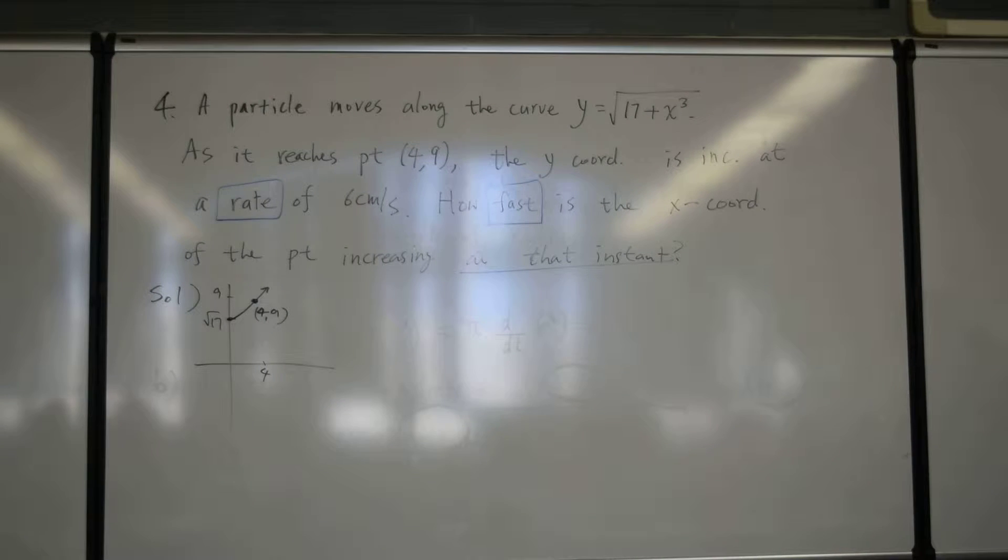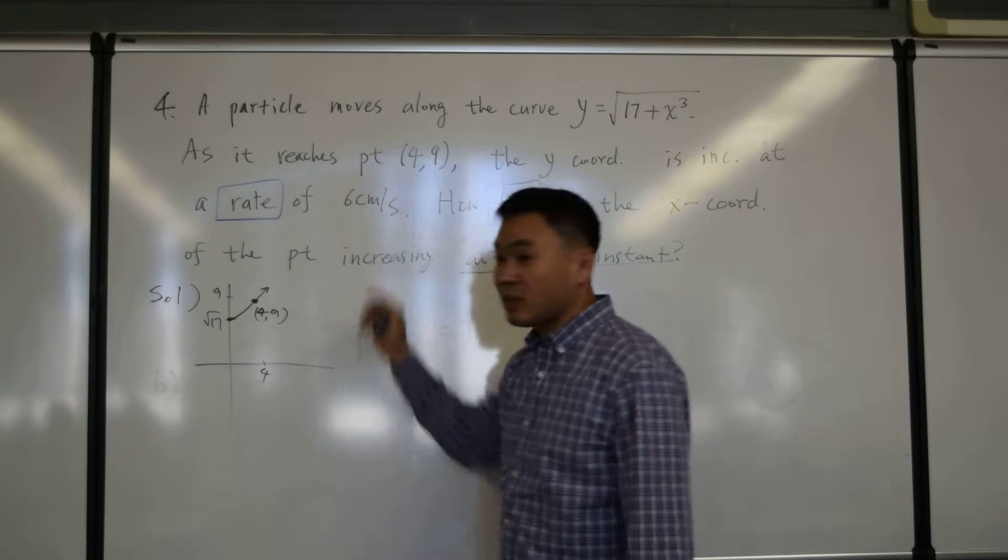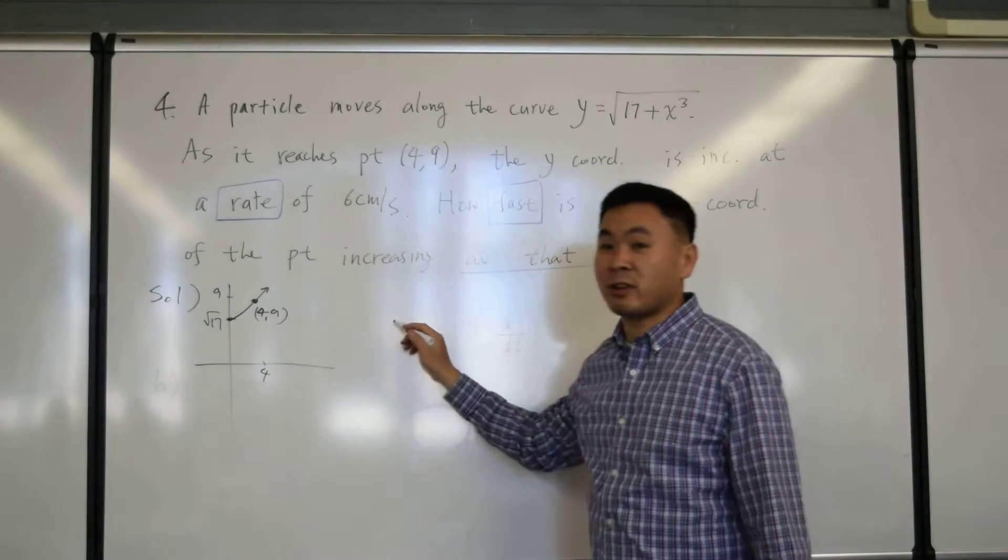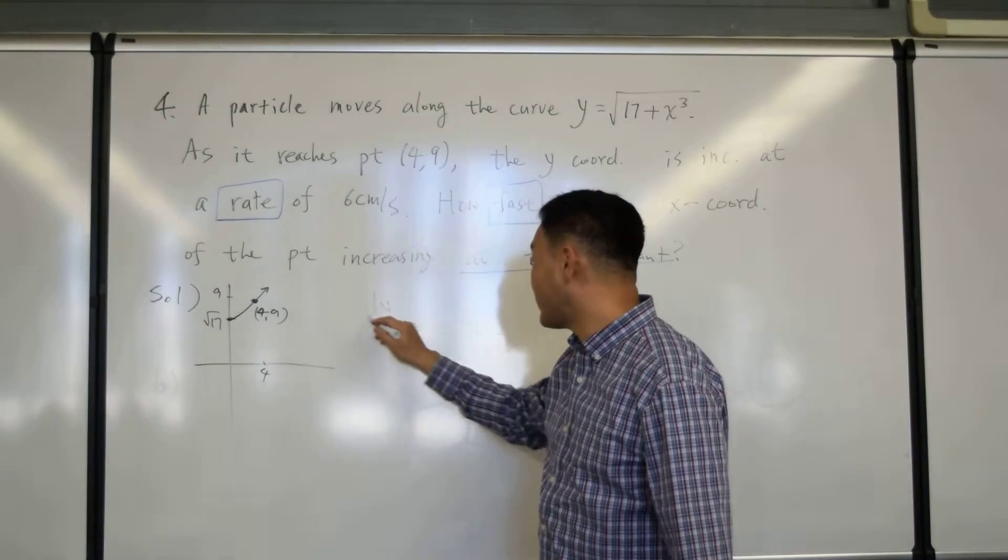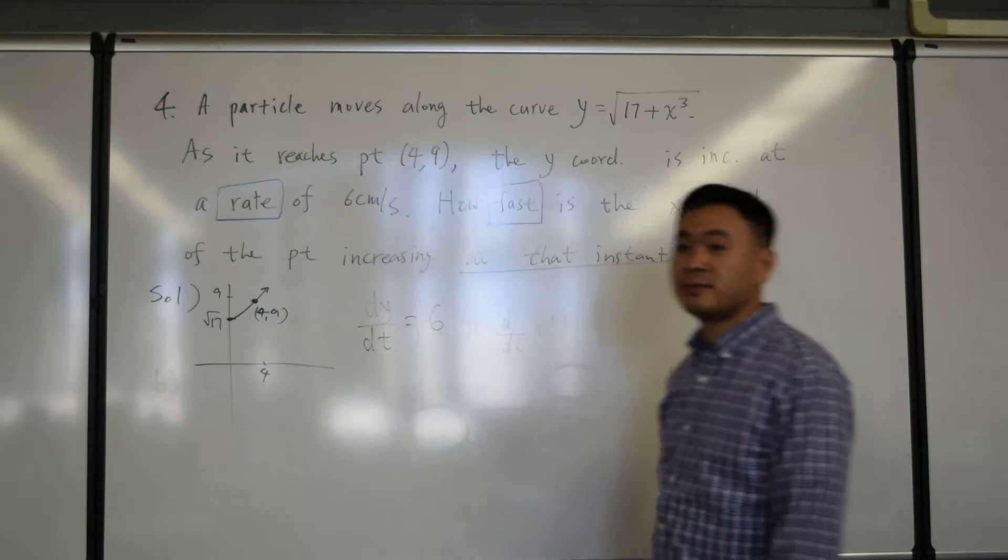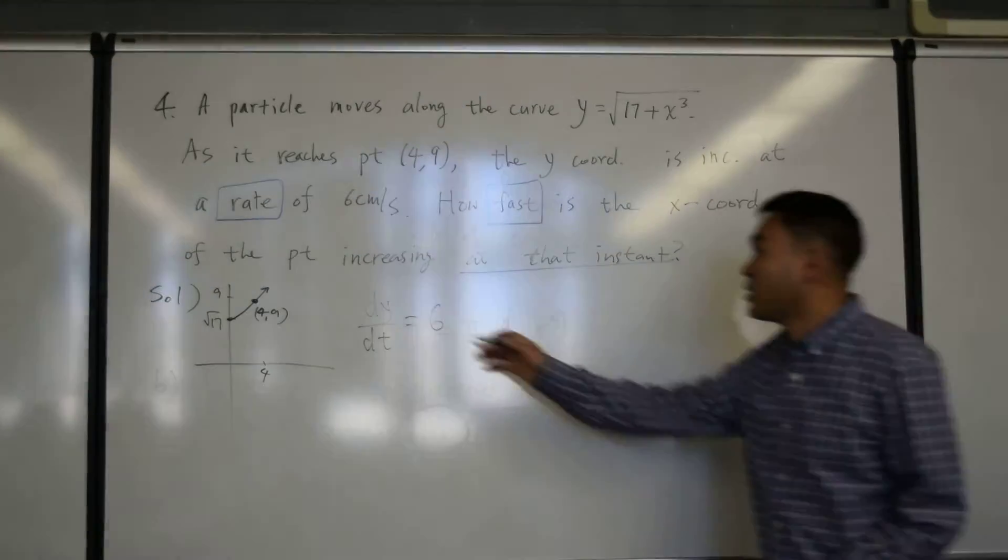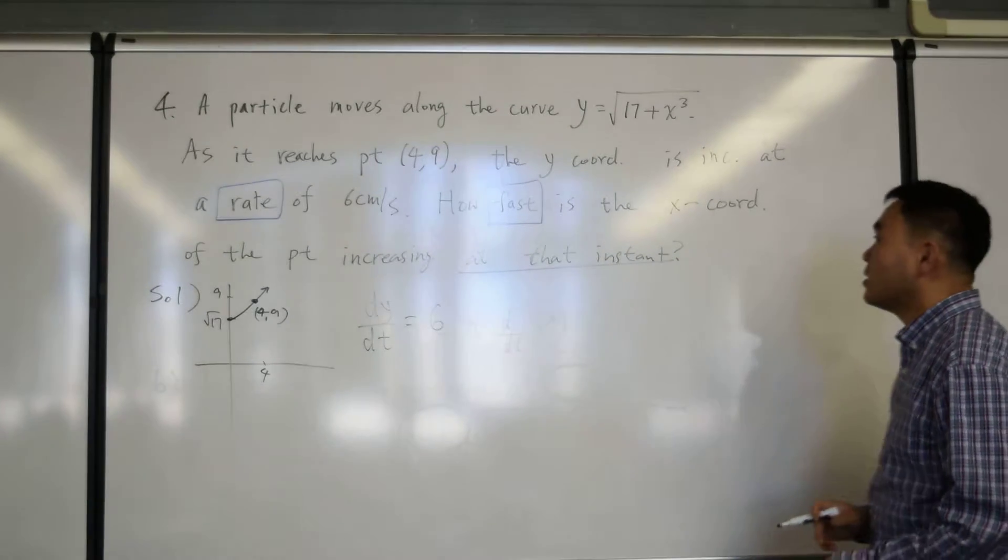So once you have that, then you can convert the question in the form of the derivative. First, y coordinate is increasing at a rate of 6 centimeters per second. How do you write that? It's the rate means derivative, but derivative of what? The y coordinate. So you write dy dt, right? Equal to 6. And that's the only way you can write down y coordinate is increasing at 6 centimeters per second.